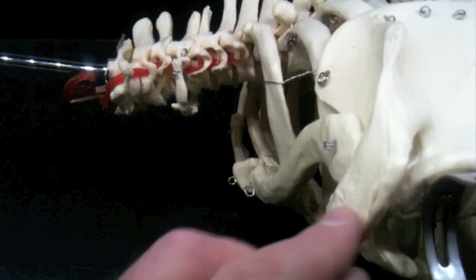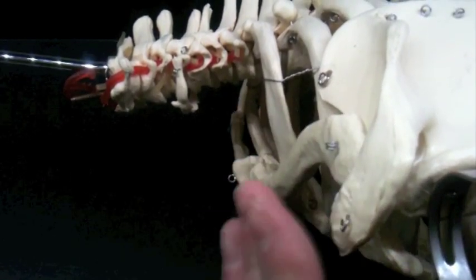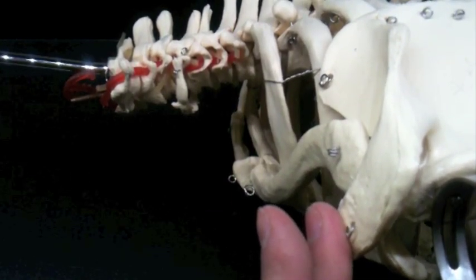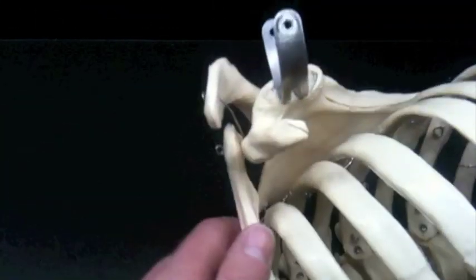And then up at the top here, the very topmost process is the acromion process. It's the one on which shoulder pads would sit. And then this one is known as the coracoid process. If I turn this at just the right angle, you can see that the coracoid process actually resembles the wing and head of a bird or raven, and that's what that means in Latin. So that's your axial skeleton.